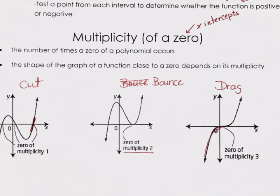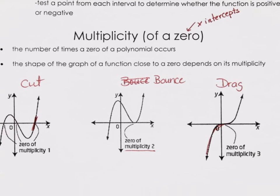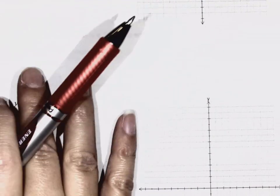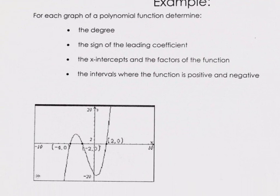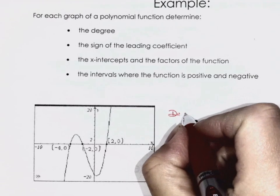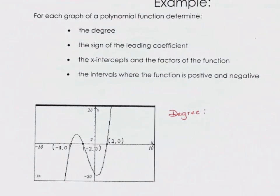We're going to practice it: cut, bounce, drag. These questions are super nice and easy. For each one, what is the degree of this polynomial? How do we know the degree? From the x-intercepts — how many x-intercepts do we have? Three. So what's my degree? Three.